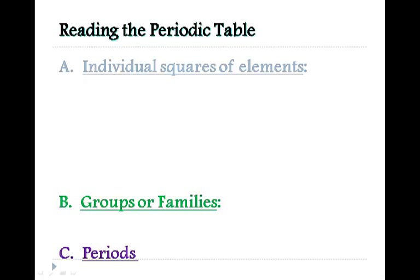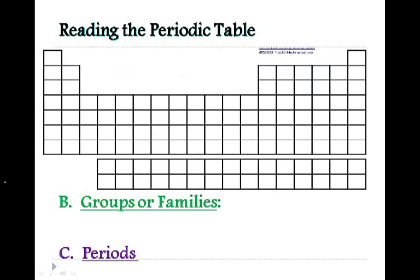Now we also have groups or families and periods on the periodic table. If we take a look at a blank periodic table, these vertical columns are called groups.